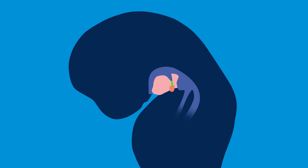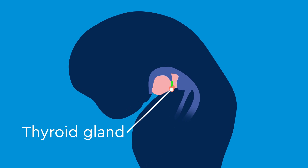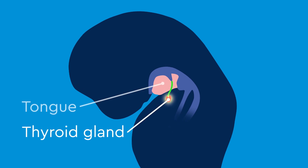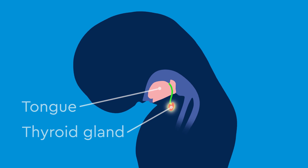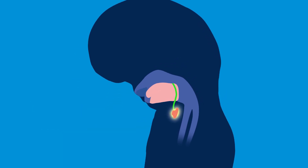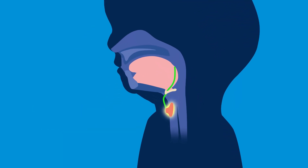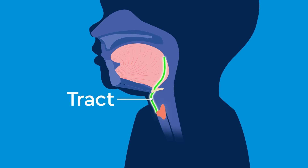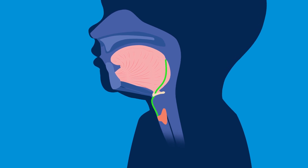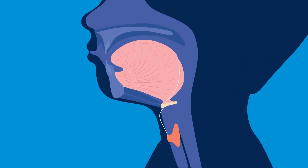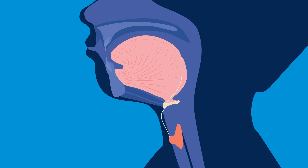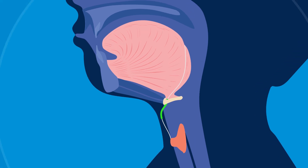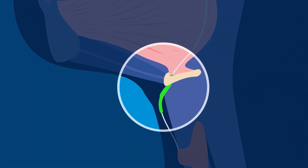During fetal development, the thyroid gland travels down the neck from the back of the tongue, forming an open path called a tract. This tract closes during development, but can remain open in some children. A pocket of fluid can grow if the tract stays open — this is the cyst.